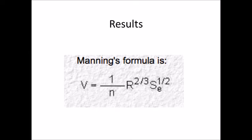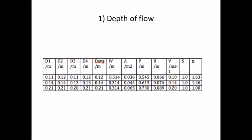Now we shall look at the results of the experiment. All results depend on Manning's formula, as shown in the slide. For the first objective — depth of flow — we took the average depth after repeating the experiment three times with increasing depth of flow. From the results, we can see that when the depth of flow increases, the Manning's n value decreases.